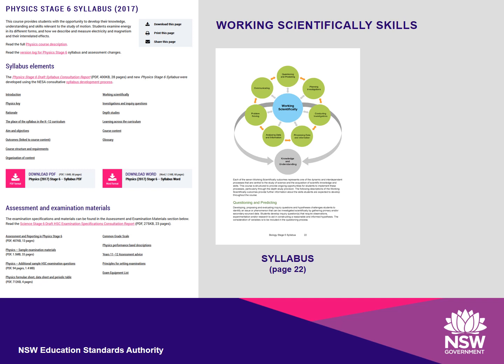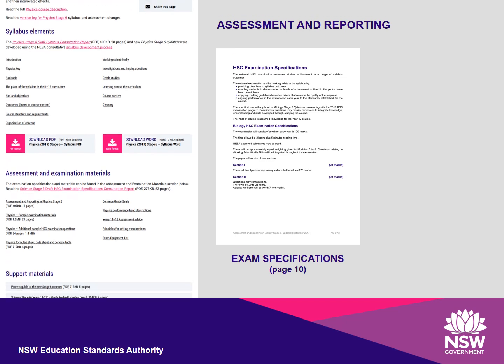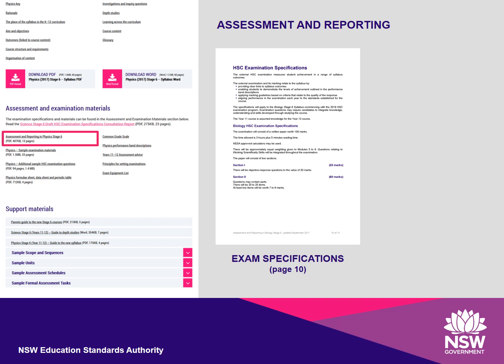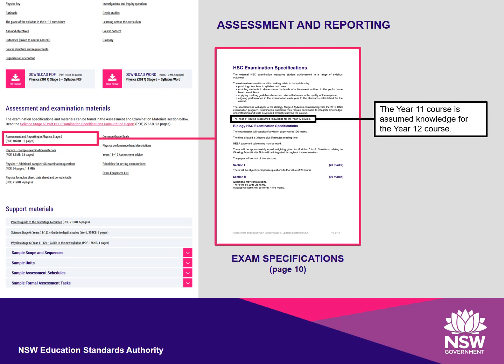The Working Scientifically skills are the same for both Years 11 and 12, and are the same across all sciences. These skills may be tested explicitly or as applied in a scenario. Only syllabus content and outcomes can be examined. Textbooks and teaching resources are not examinable. The Assessment and Reporting document includes school-based assessment requirements and the exam specifications, which are on page 10. They detail exactly what the requirements are for each exam, including structure and timing, question types, the number of questions, and the mark allocation per section.